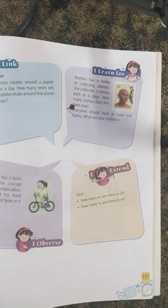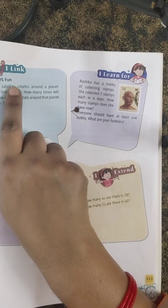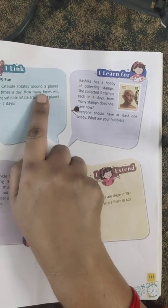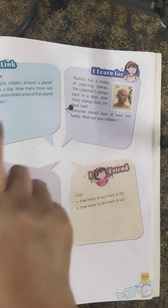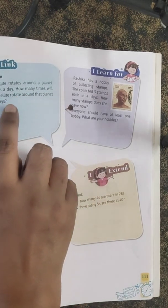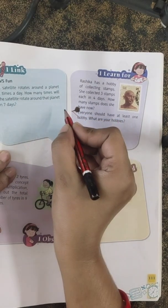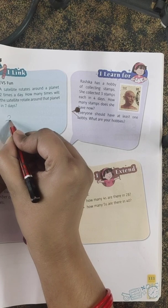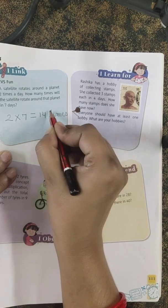Now we are doing page 111 of your maths course book. The first question is an EVS link: A satellite rotates around a planet two times a day. How many times will the satellite rotate around that planet in seven days? So, 2 × 7 = 14 times.